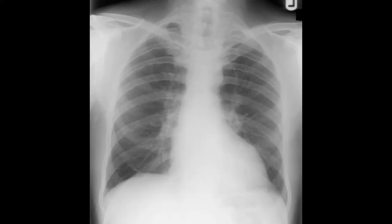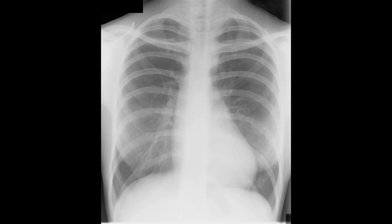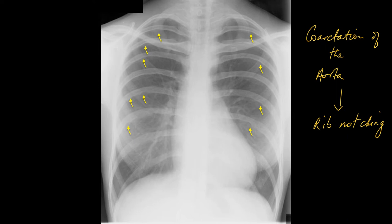This is a patient who has a relatively normal-looking chest X-ray. The heart is a little big, or at least on the upper limit of normal for size. But if you look carefully, you can see some rib notching, and this patient has coarctation of the aorta. The rib notching is bilateral and tends to involve the third to the eighth ribs. This is because the intercostal vessels dilate to try and bypass the coarctation, which is just beyond the arch of the aorta. Here are further cases showing rib notching in the same distribution, due to dilatation of the intercostal vessels.